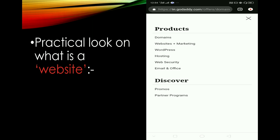When you choose a domain — website plus marketing, WordPress, hosting, web security, email offers — this is called web pages. It is called related content. Now there is related content. The unique name is called GoDaddy. So this is the story of a server.